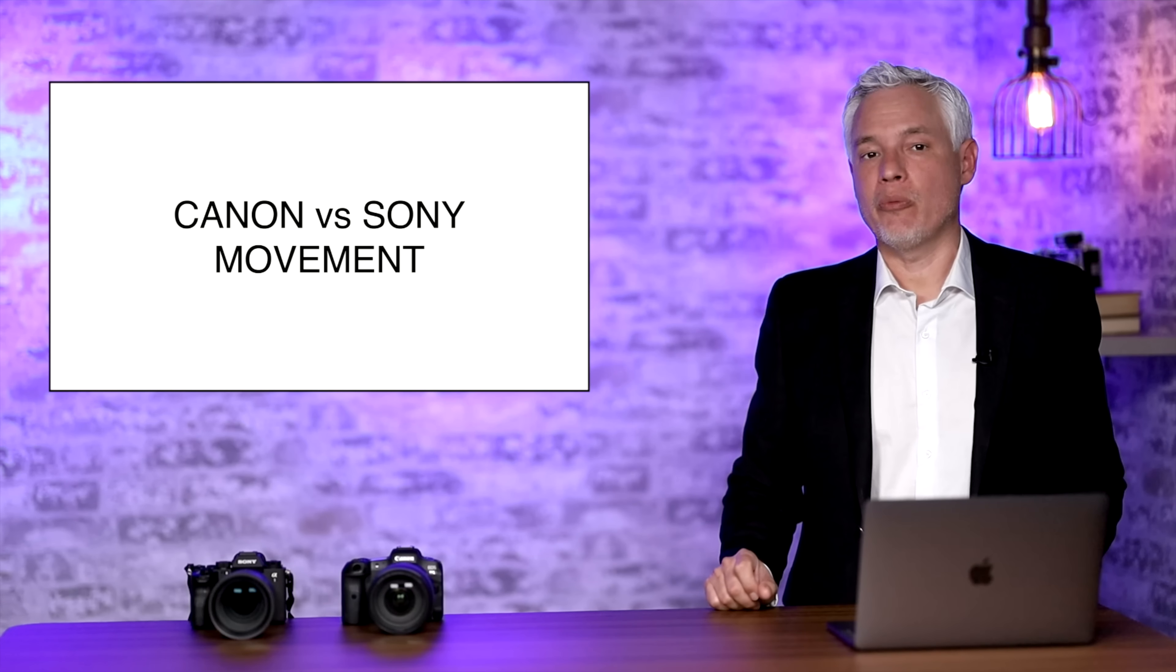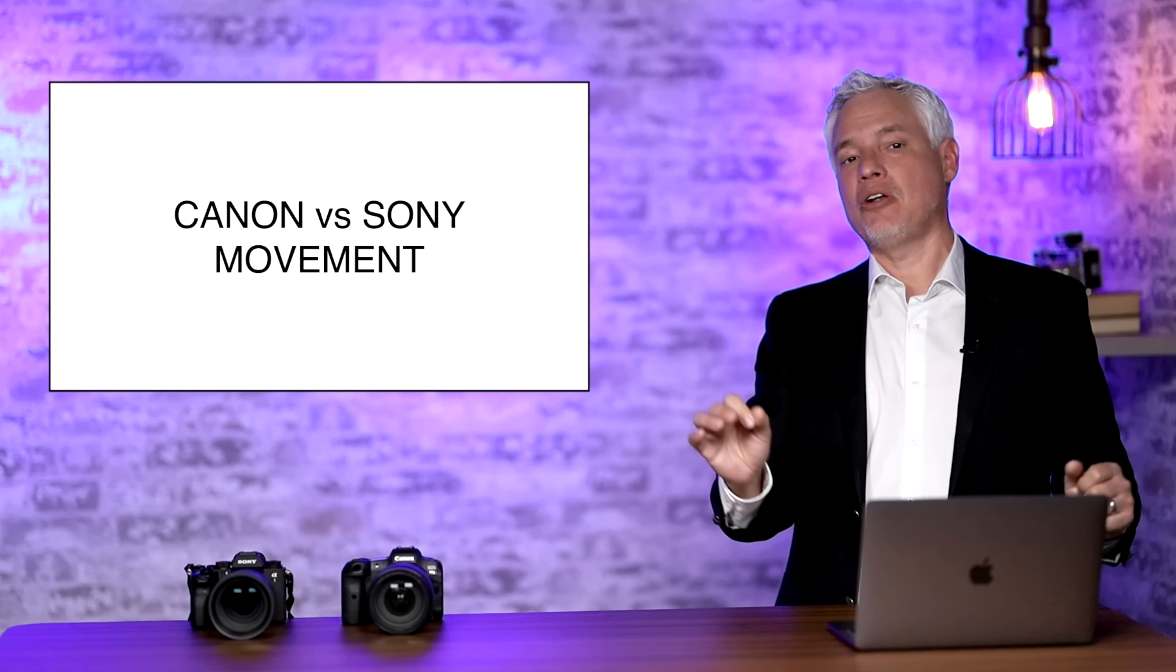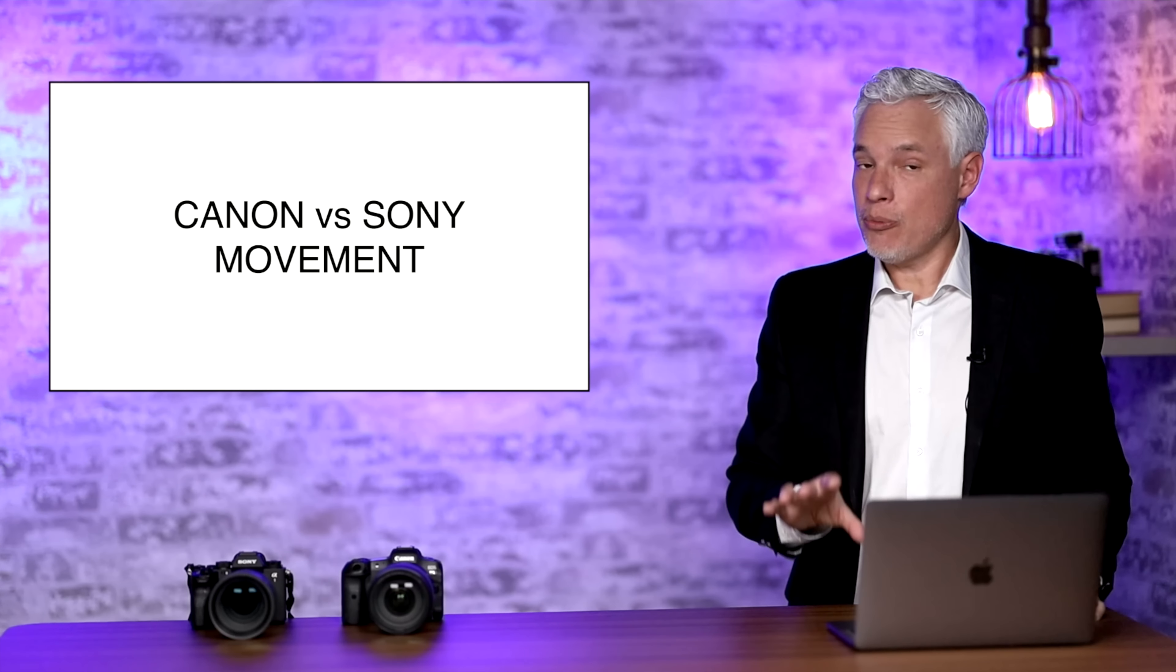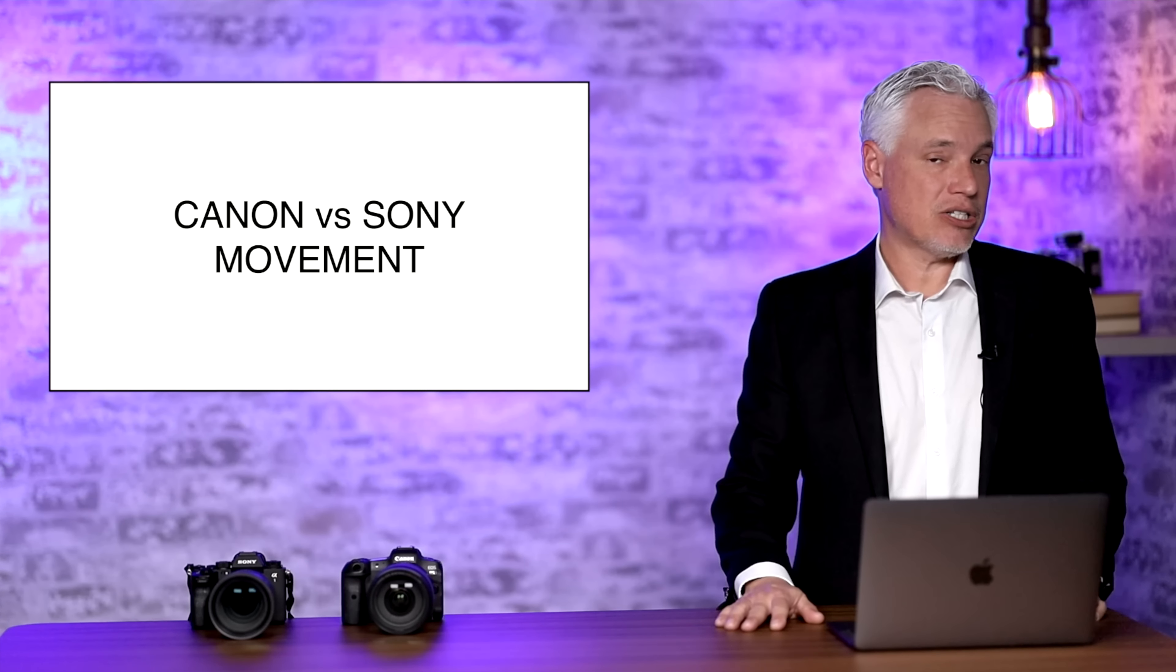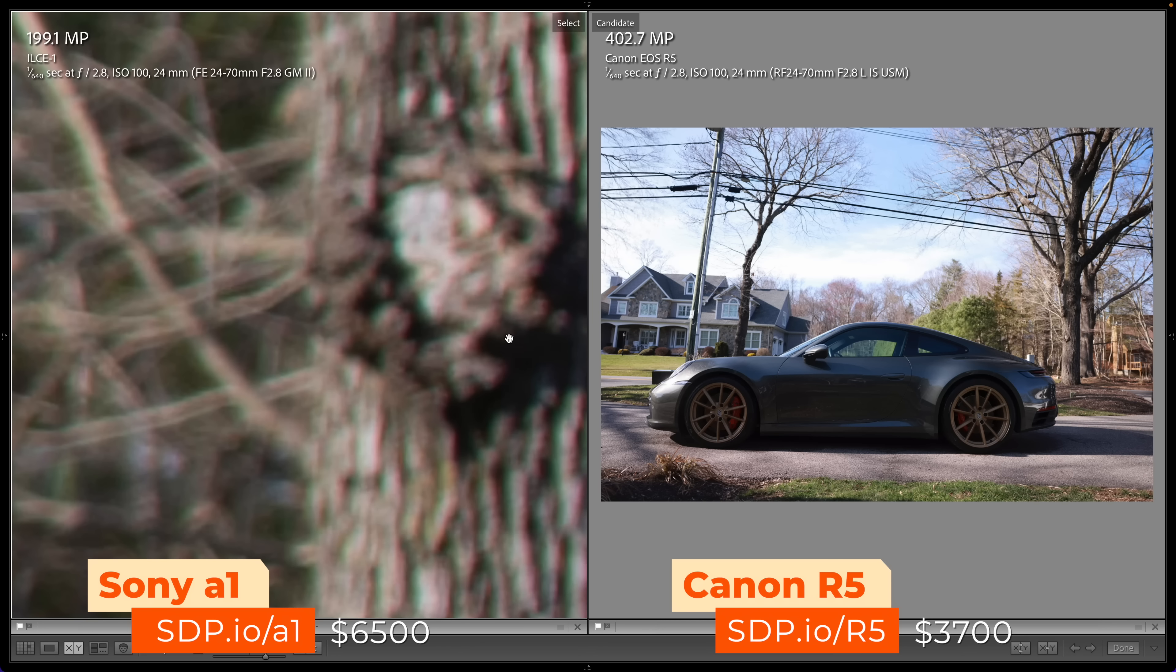But camera shake isn't the only movement we encounter in the real world. Every little leaf on the tree is moving even on a still day. Water is moving, clouds are moving, and any sort of subject movement will also ruin the images and here the two cameras handle it completely differently. So let's take a look.